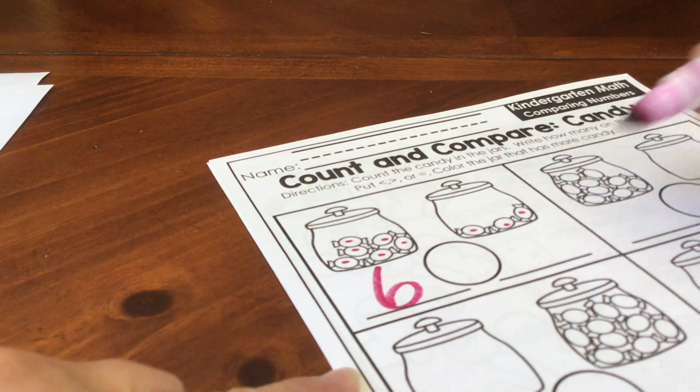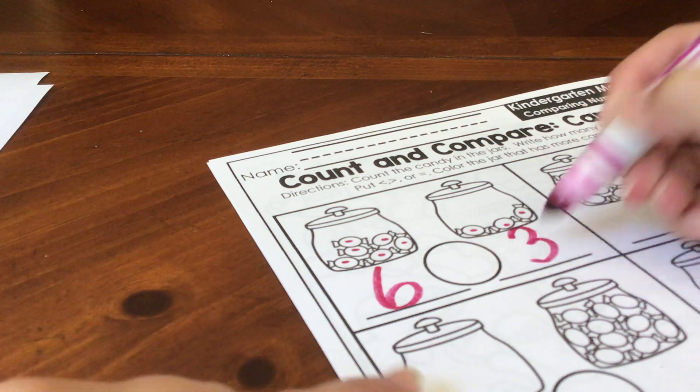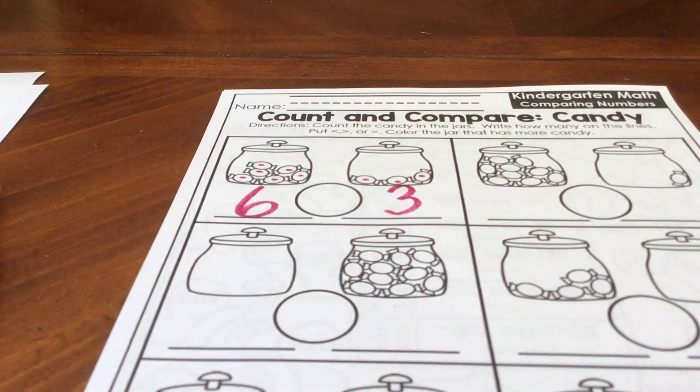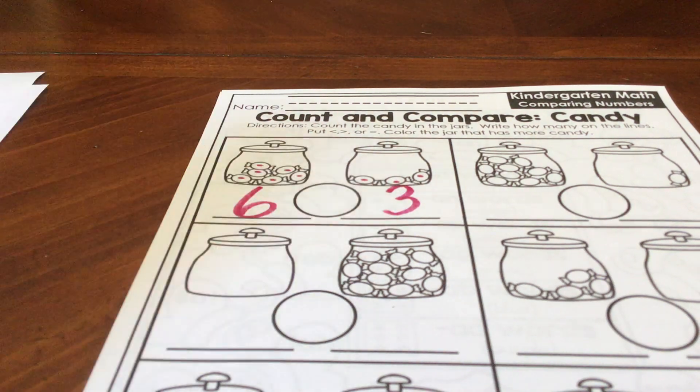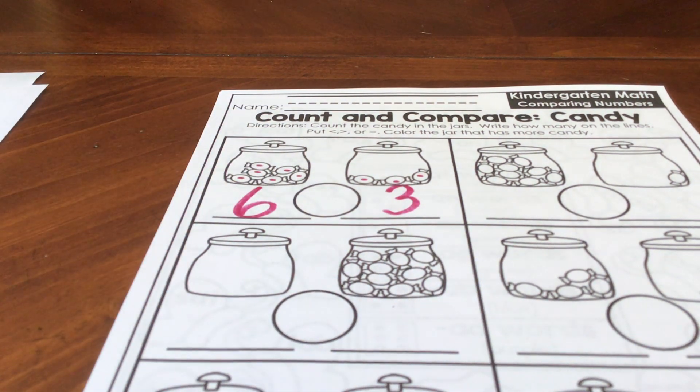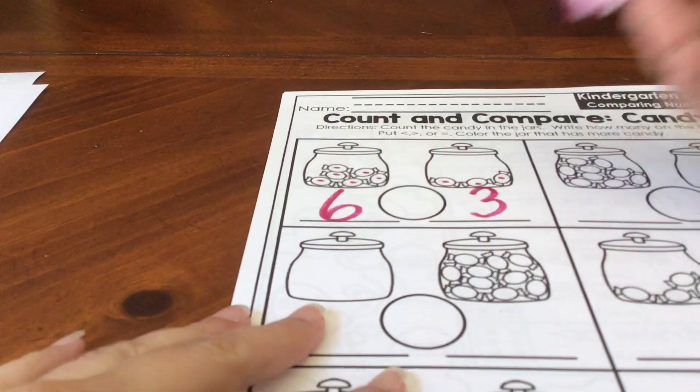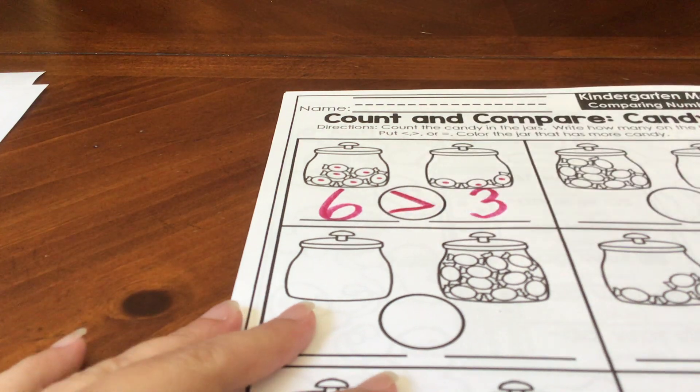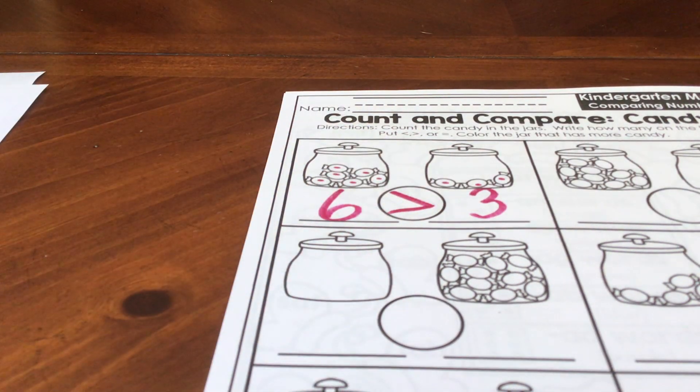One, two, three candies in this jar. So we write the number three. And we've got to decide, is six more than three, greater than three? Is six less than three? Are six and three equal? Look at your jars if you need help. Which jar has more in it? This jar has more in it. You would want that jar. So we need to make our alligator mouth to eat the side that has more. He's very hungry. So he wants to eat that side. His mouth is open on the side that has more.